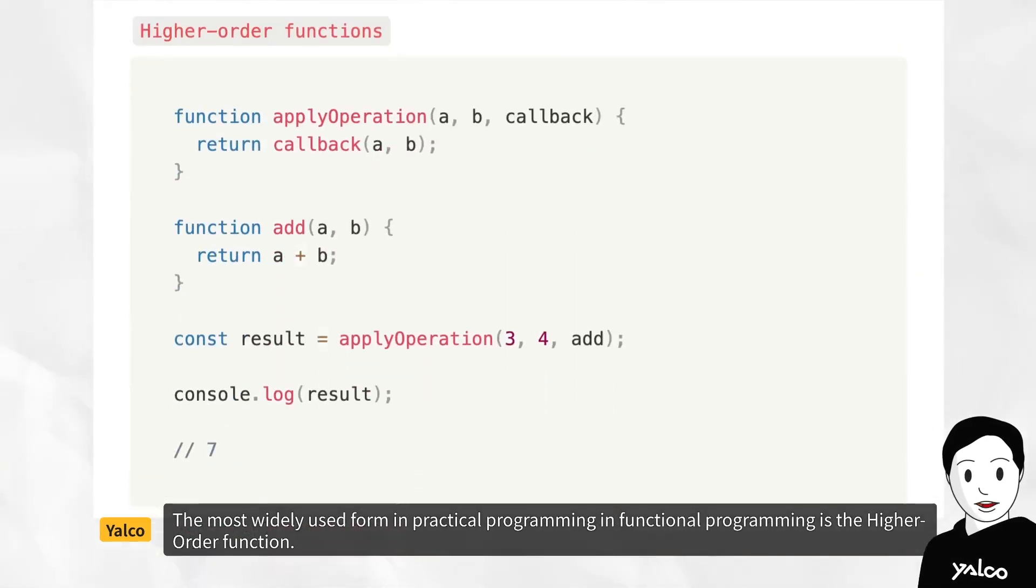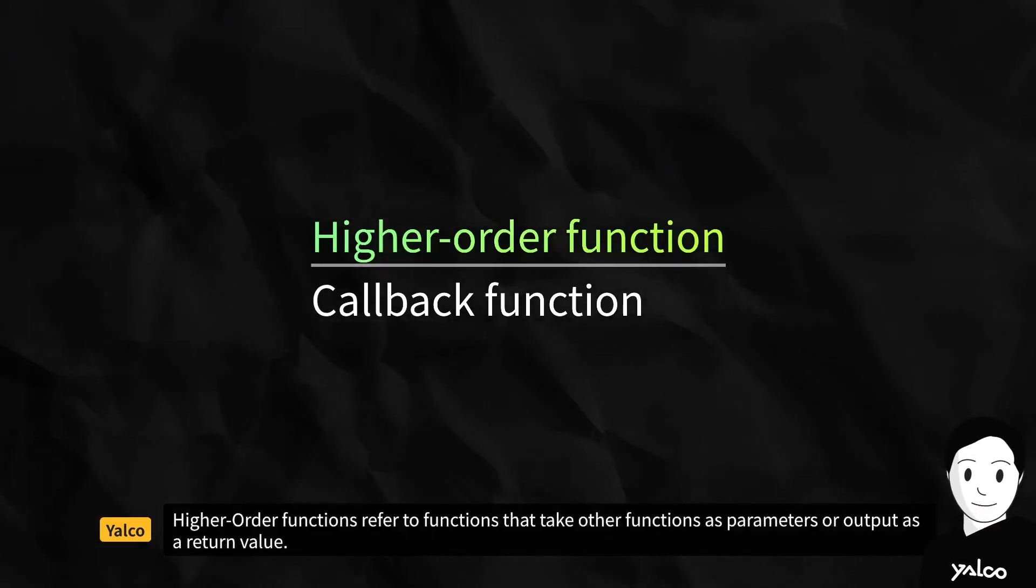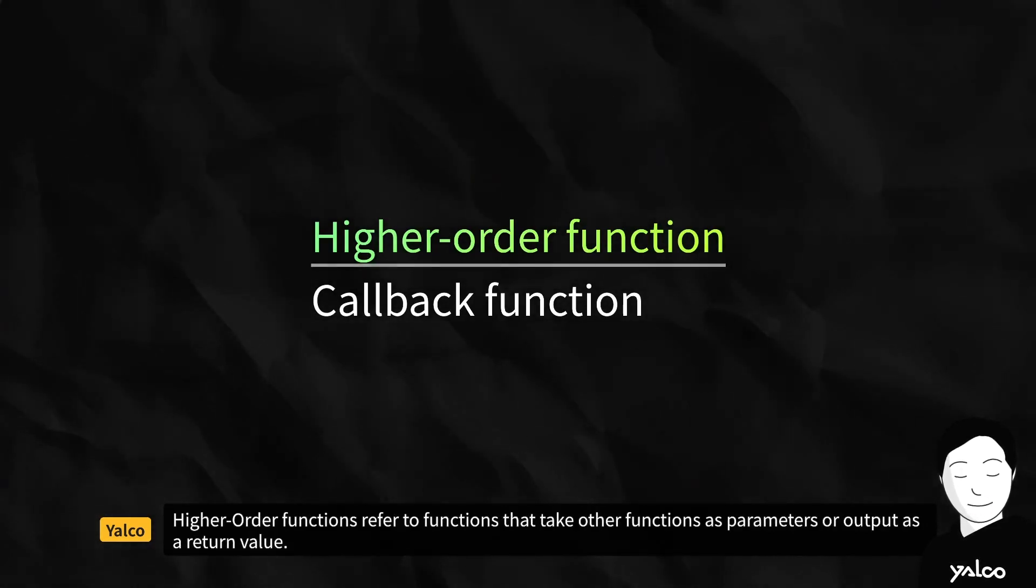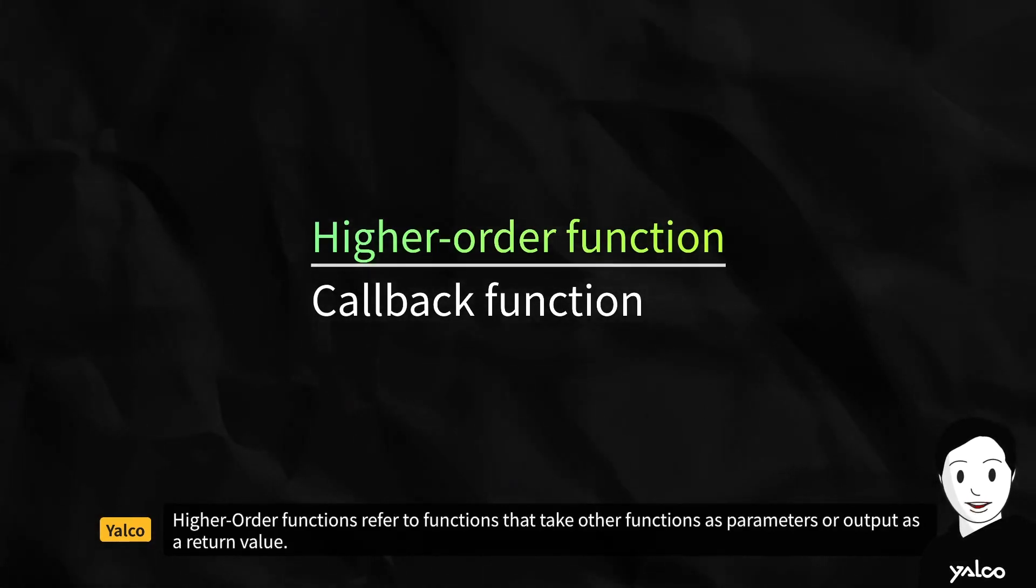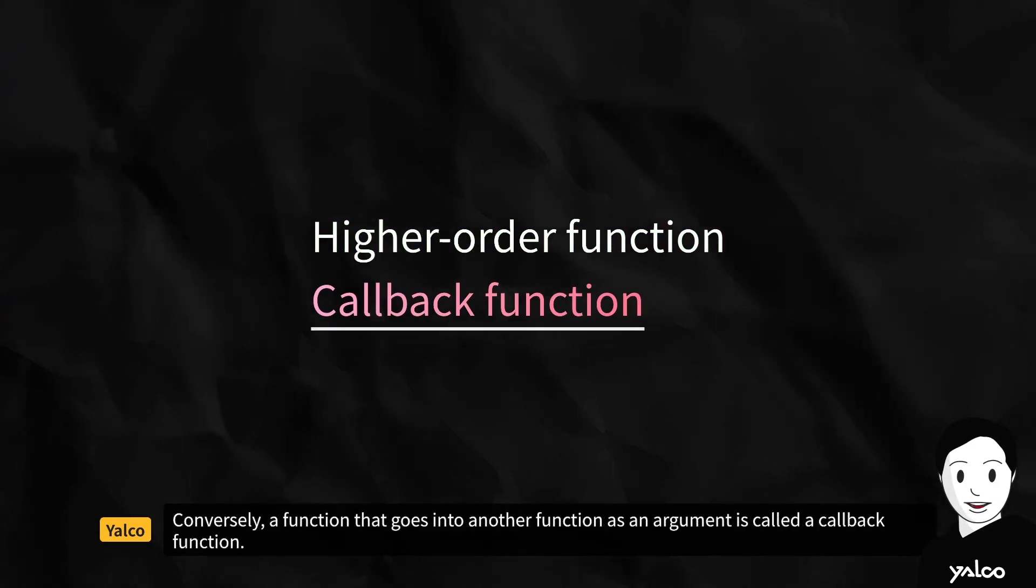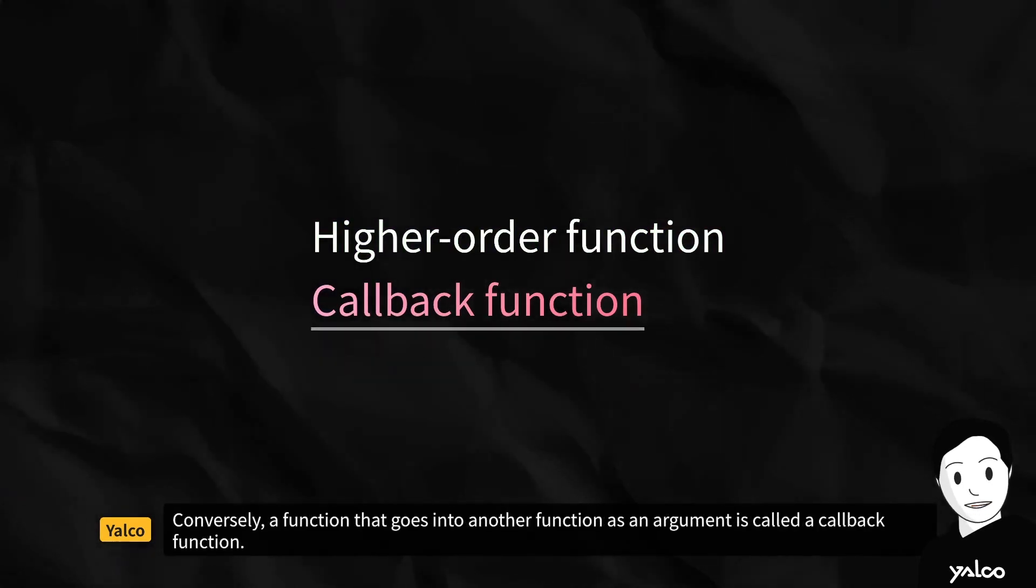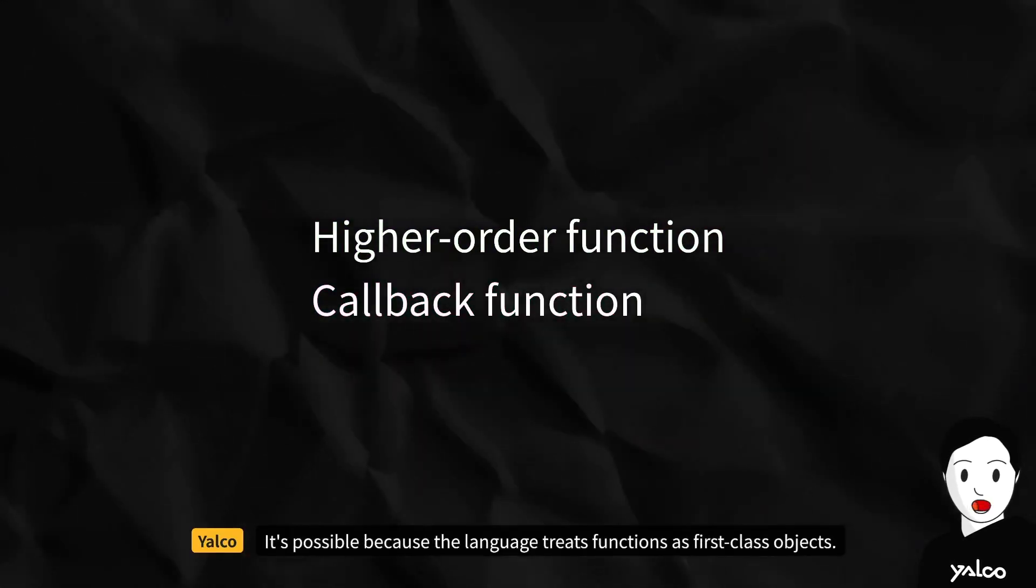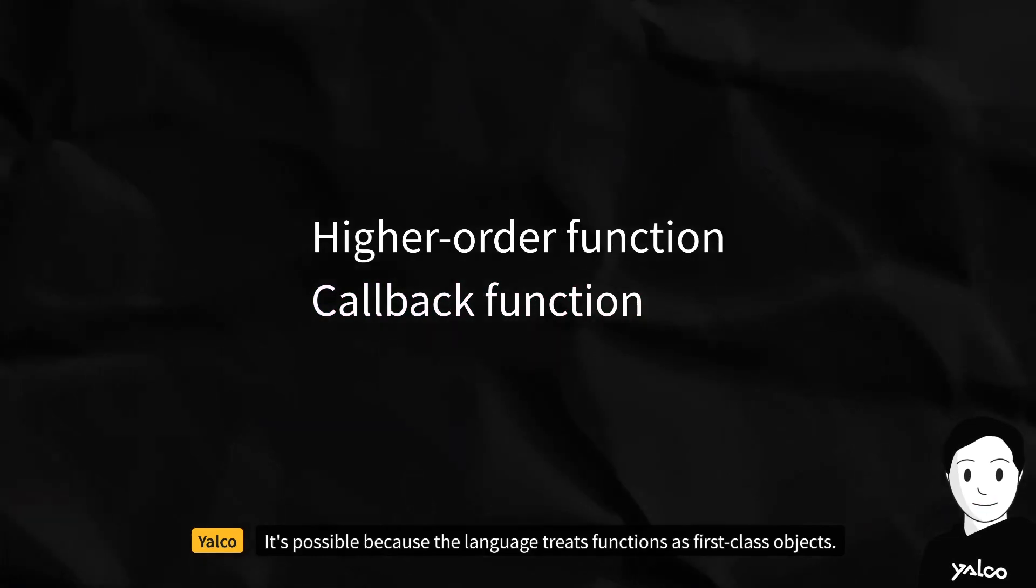The most widely used form in practical programming, in functional programming, is the higher-order function. Higher-order functions refer to functions that take other functions as parameters or output as a return value. Conversely, a function that goes into another function as an argument is called a callback function. It's possible because the language treats functions as first-class objects.